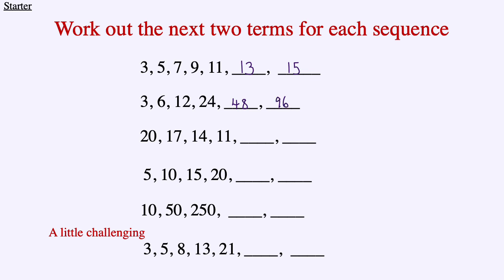The next sequence is 20, 17, 14, 11. Each time we are subtracting 3: 20 subtract 3 is 17, 17 subtract 3 is 14, and so on. So your next two terms will be 8 and then 5.